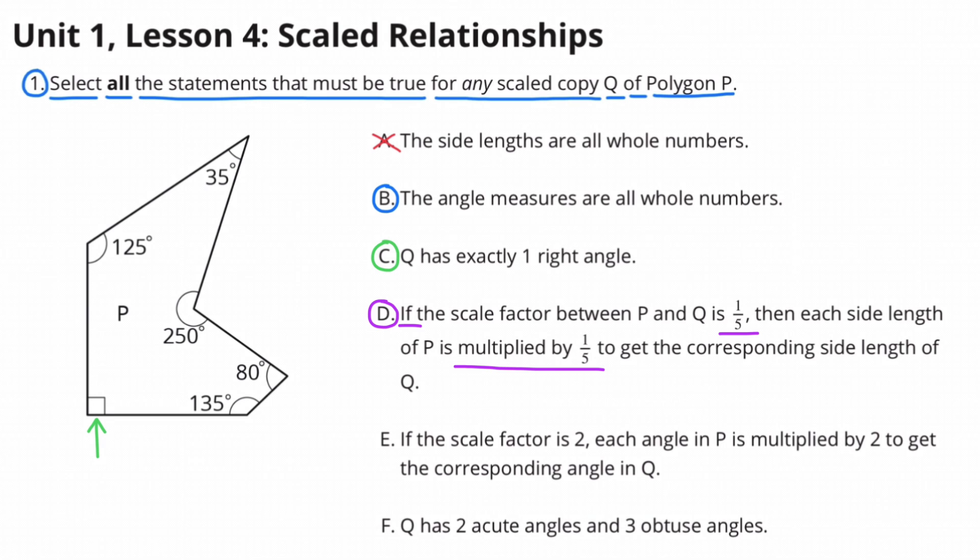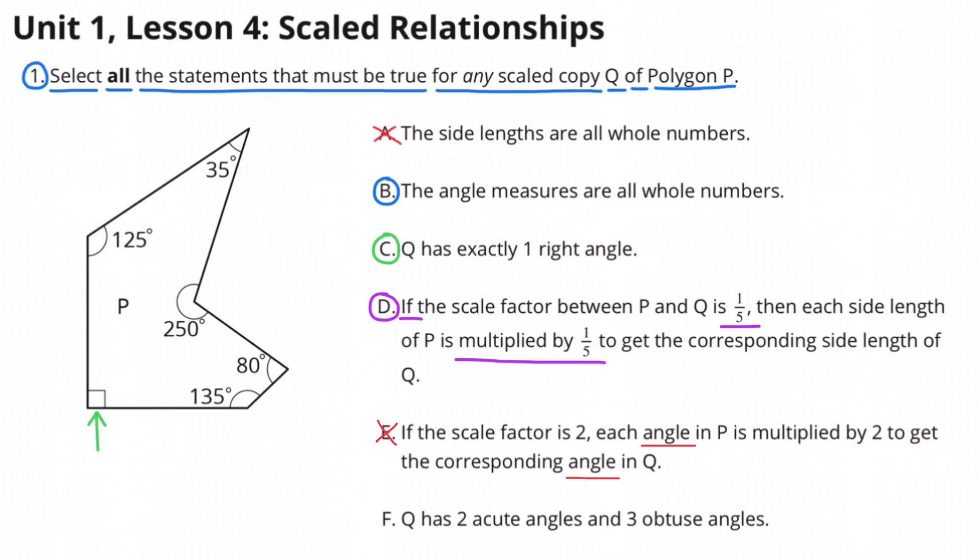I selected D because if the scale factor between P and Q is 1 fifth, then we would have to multiply the side lengths of P by 1 fifth to get the corresponding side length of Q. I didn't select E because you don't multiply the angle by the scale factor. The angle always stays the same.